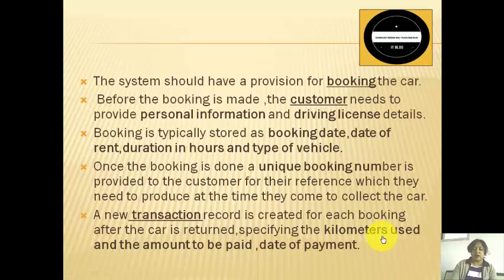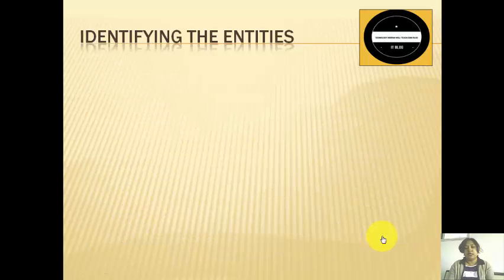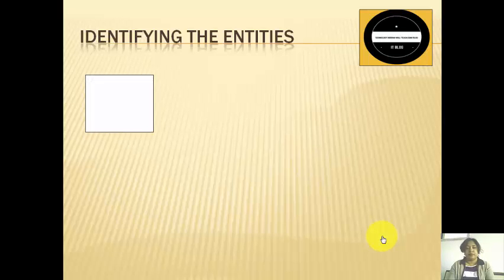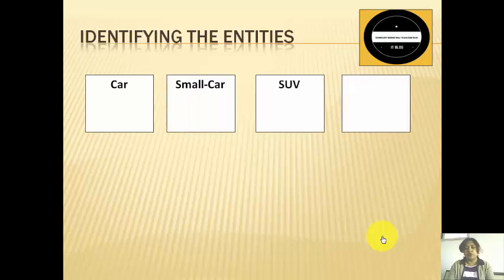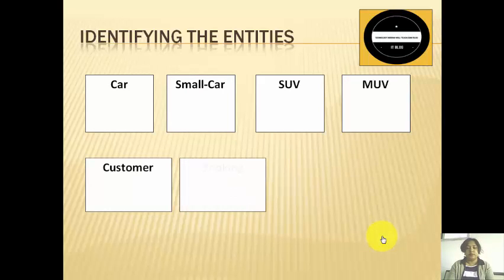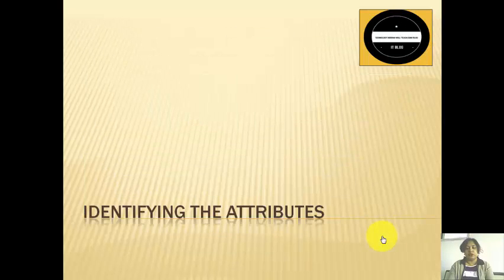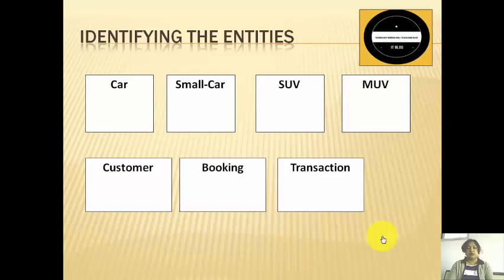The first step of the entity relationship model is to identify the entities. We have already studied the case study in detail and are now identifying the entities. The entities are car, small car, SUV, MUV, customer, booking, transaction, and other good entities which we can derive from the case study.